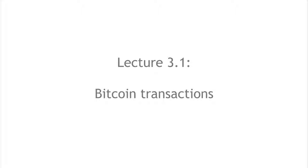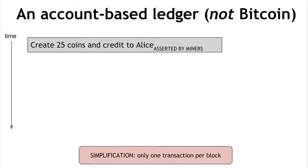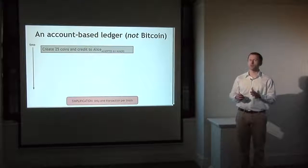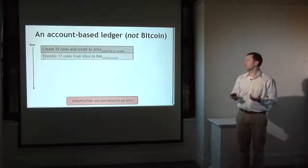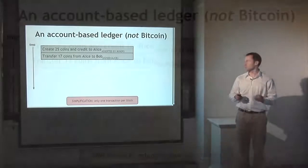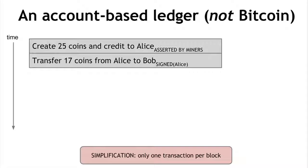We'll start by looking at transactions in Bitcoin. Transactions are really the fundamental building block on which the whole currency is based. We have this append-only ledger where as time goes on we just add more and more units to it. We'll take a simplified model here where instead of having blocks we just have individual transactions being added to the ledger one at a time. The first model you might think of — and it's a lot of people's mental model for how Bitcoin works — is an account-based system, where you have transactions that create new coins and credit them to somebody.